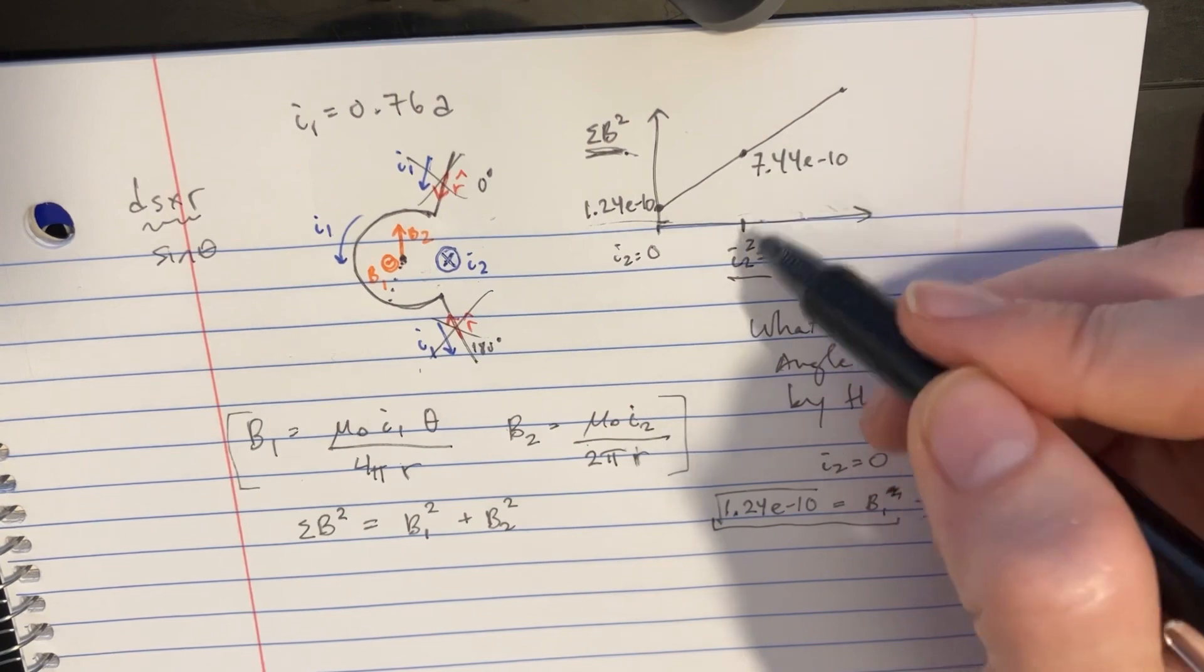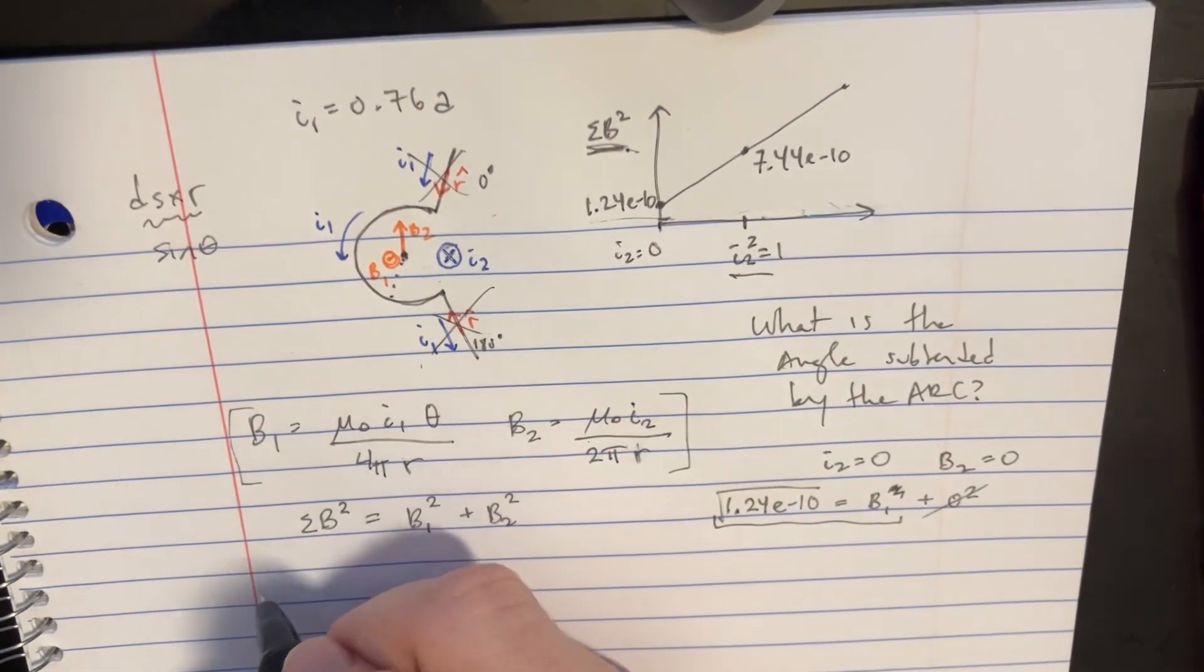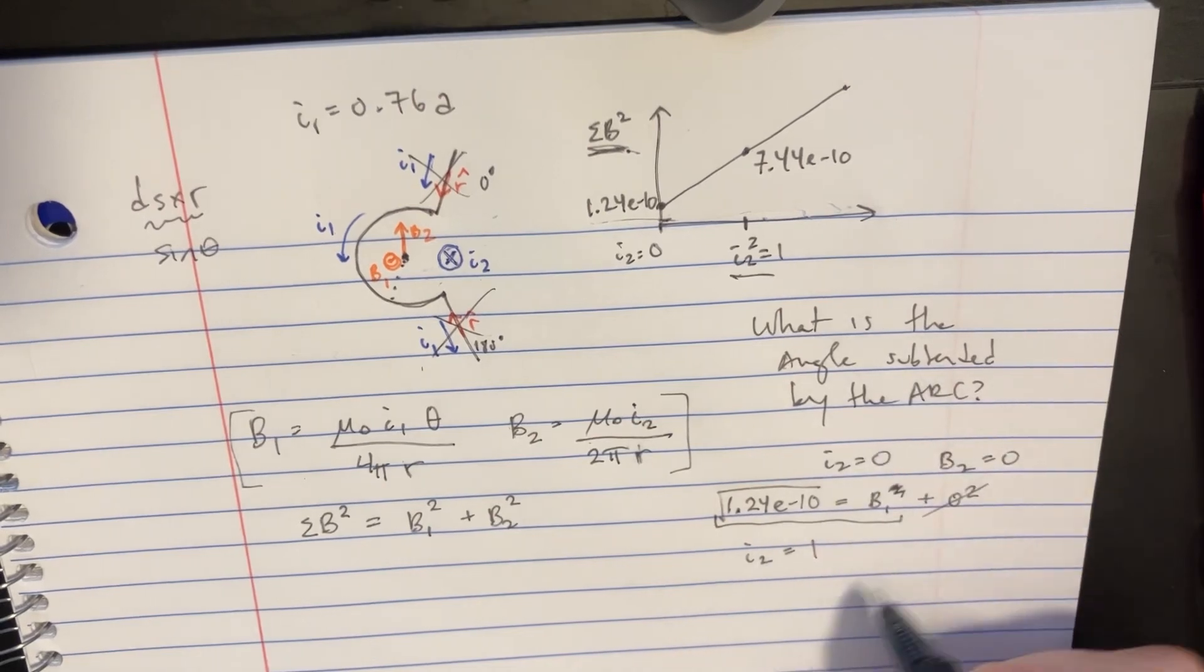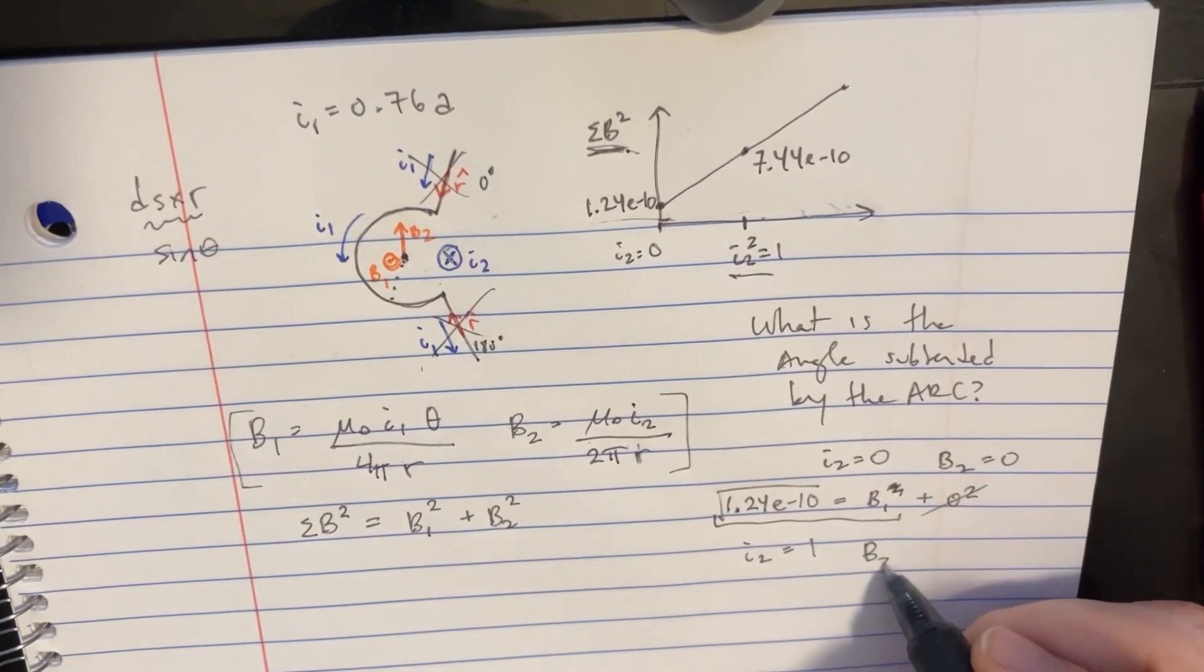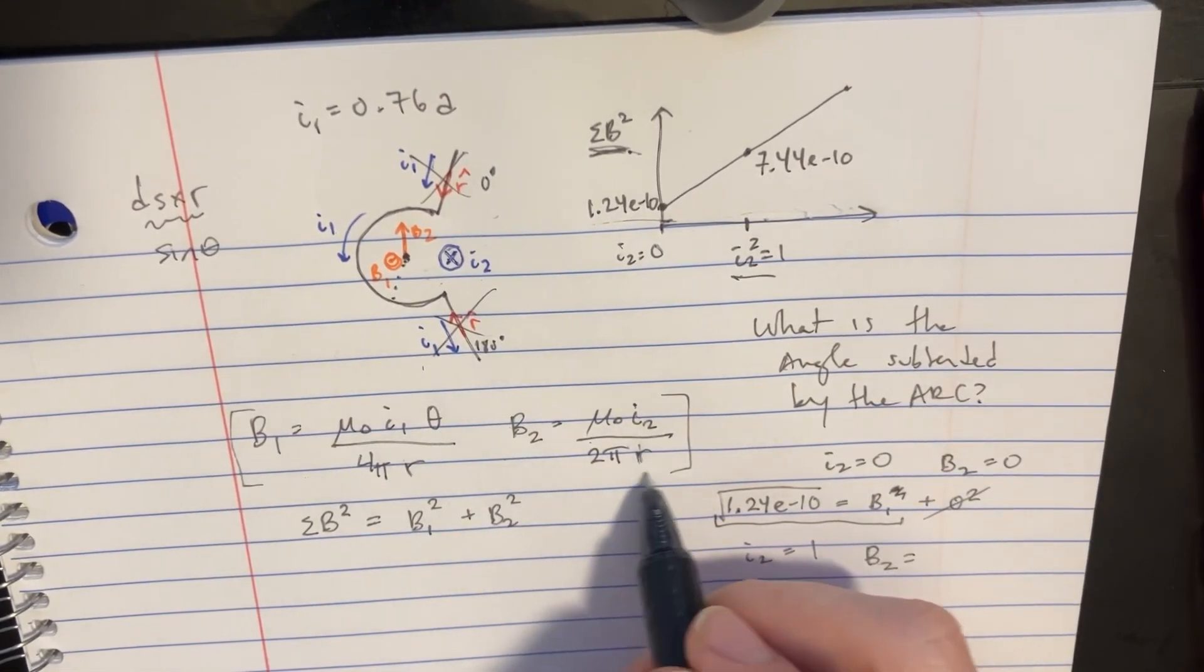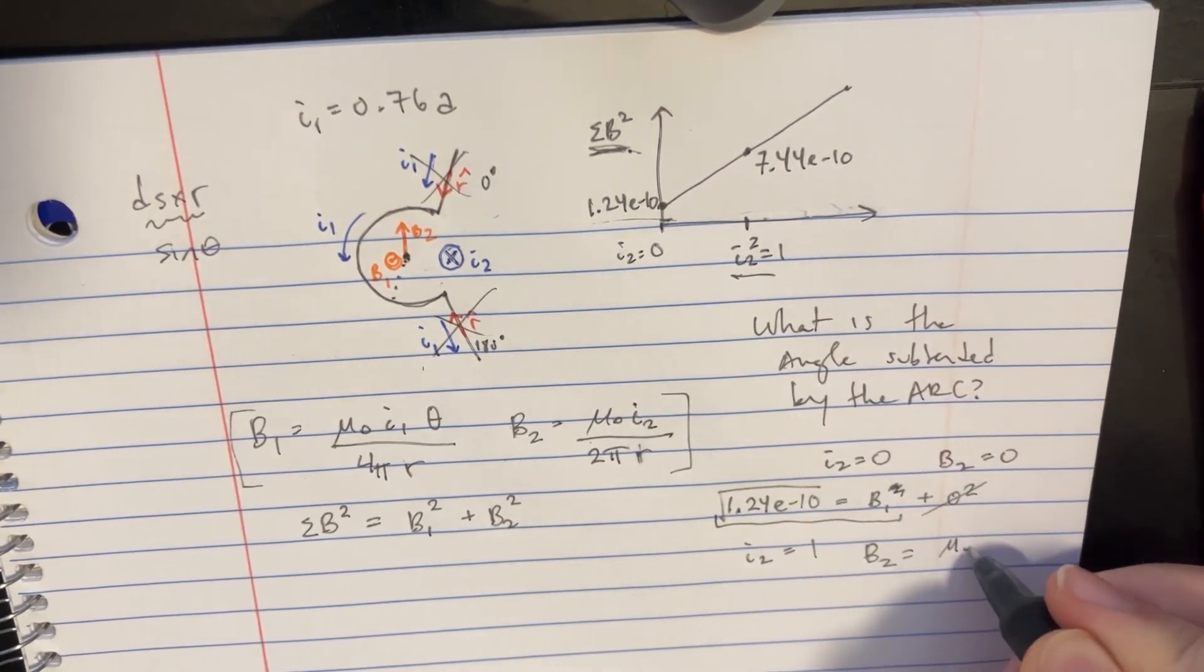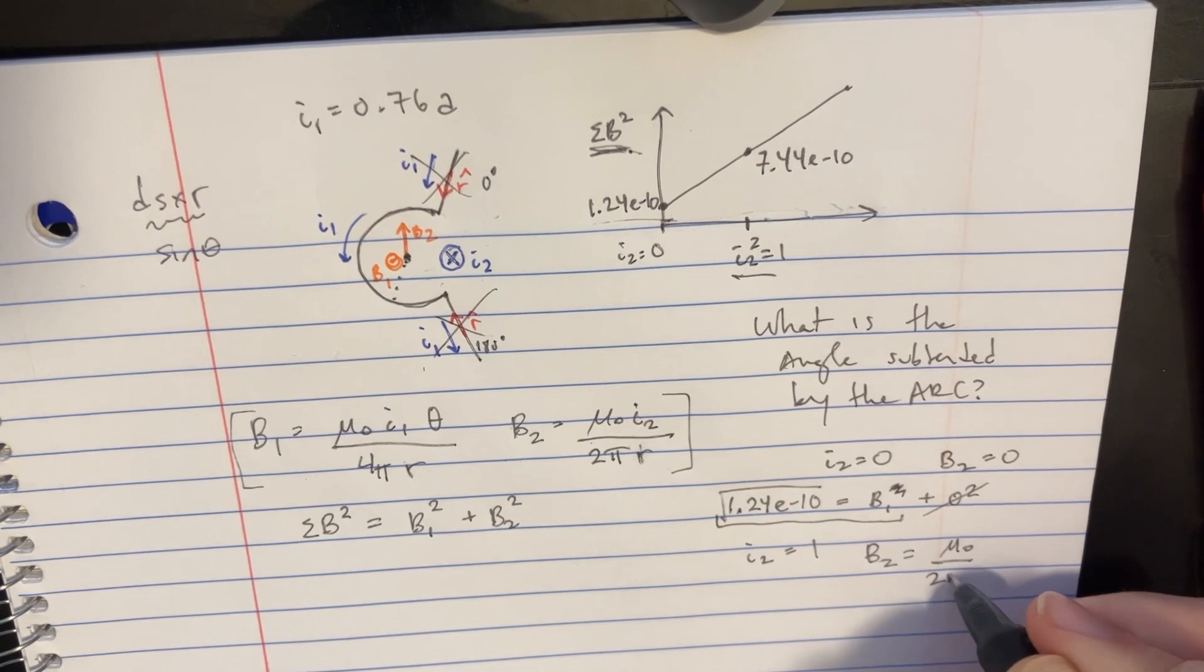But this is another point that's pretty interesting. When I2 equals 2, or sorry, when I2 equals 1, if I2 equals 1, then that means that we can use the B2 formula we found over here. But we'll just get rid of the i because it's just a 1. So we'll say B2 is mu naught 2 pi r.